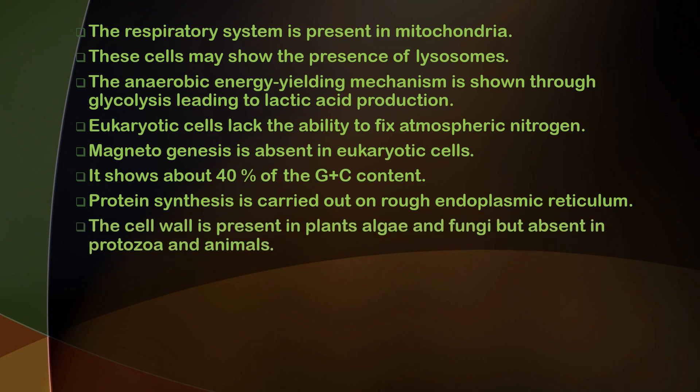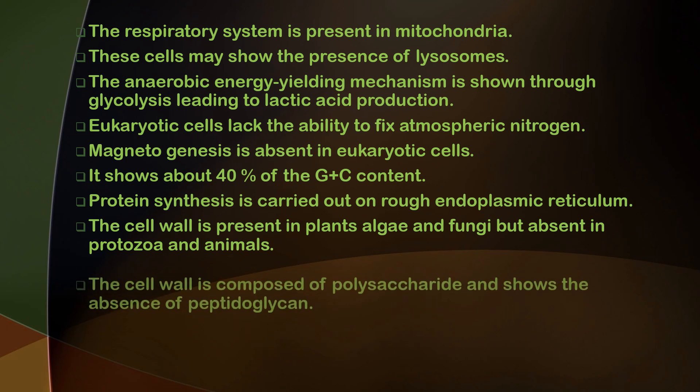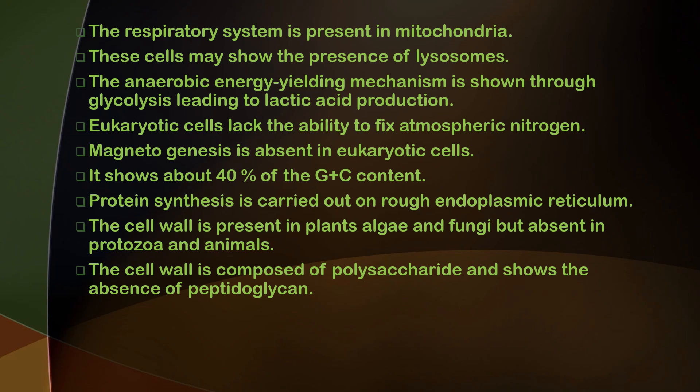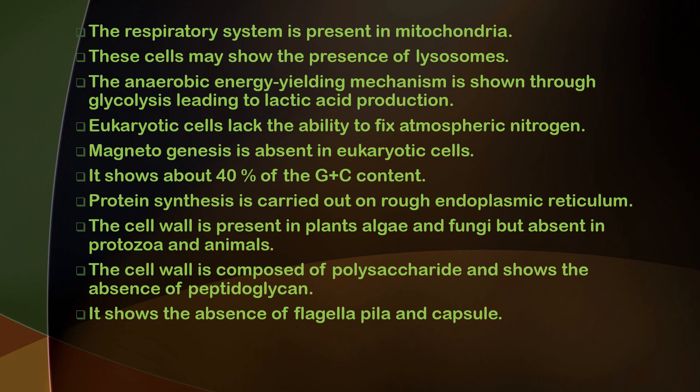The cell wall is present in plants, algae, and fungi, but absent in protozoa and animals. The cell wall is composed of polysaccharides and shows the absence of peptidoglycan, whereas prokaryotic cells contain peptidoglycan as an important part of the cell wall. Flagella, pili, and capsule are absent in eukaryotic cells; these are locomotory organs of prokaryotic cells.